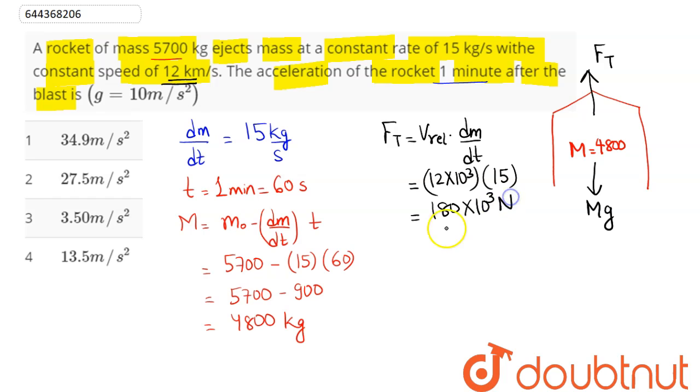When this rocket accelerates upward by this thrust force that is 1.8 into 10 power 5 newton. The thrust force is 1.8 into 10 power 5 newton. Rocket is accelerating upwards, pseudoforce on this rocket acts downward.